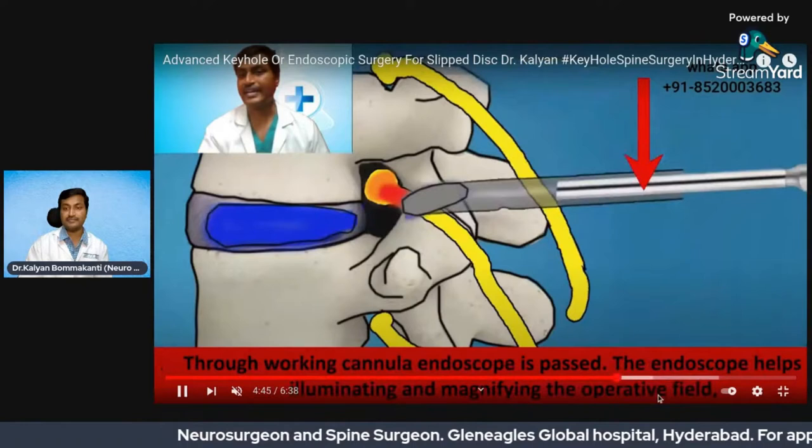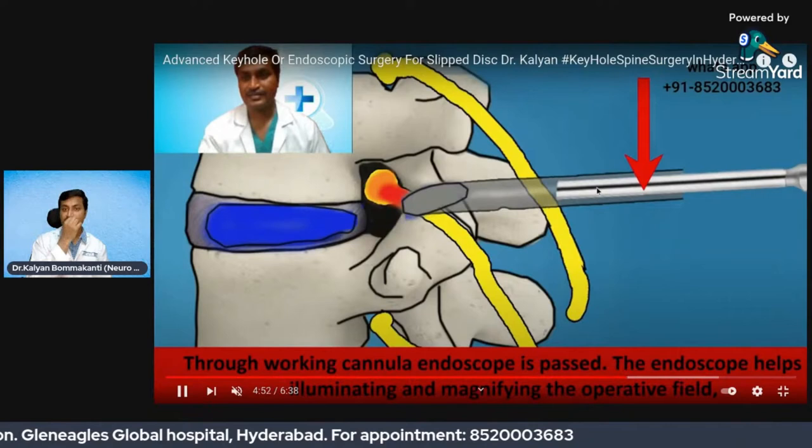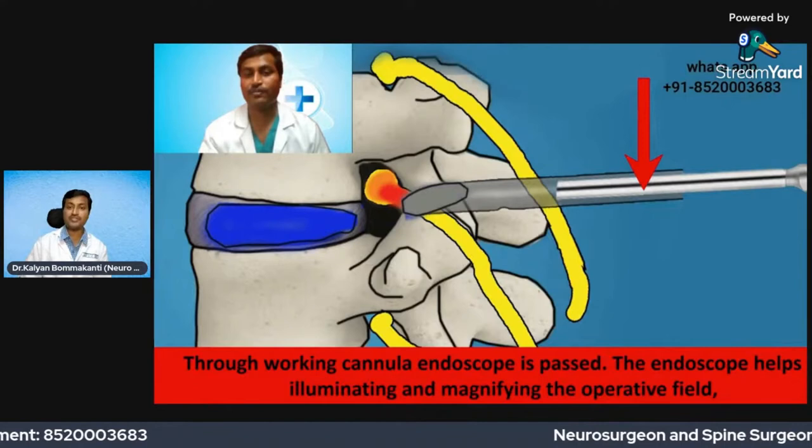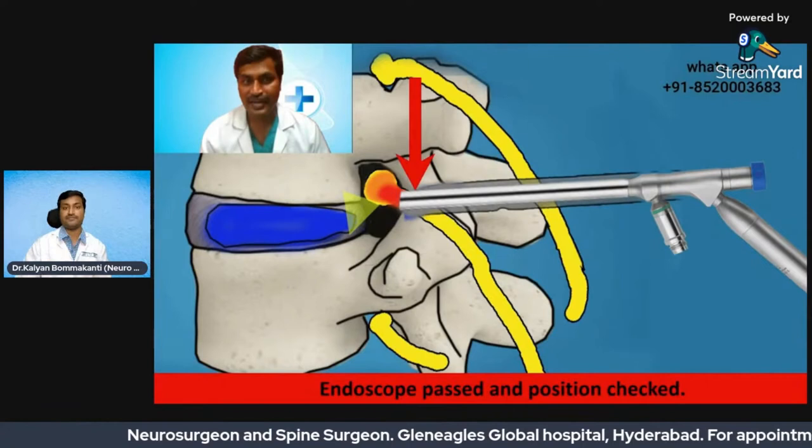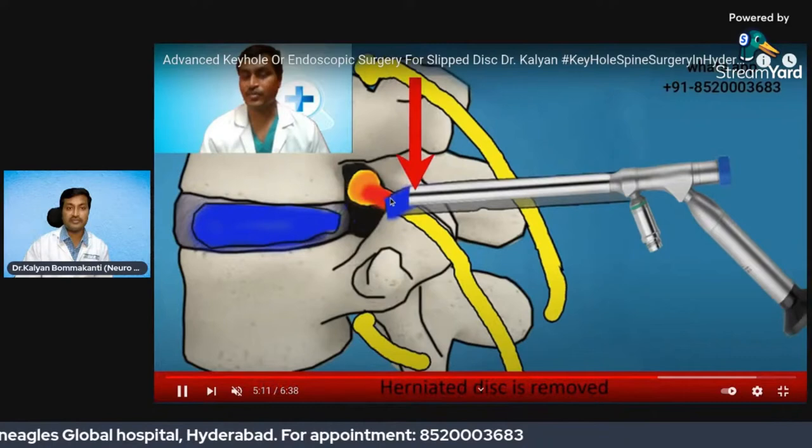This is the cannula which is passed over the dilator. Through the dilator, you can see the endoscope going through it. The endoscope is a cylindrical device with a diameter of four to five millimeters through which my instruments pass. The endoscope provides both magnification and illumination, and through this instrument I remove the herniated portion.